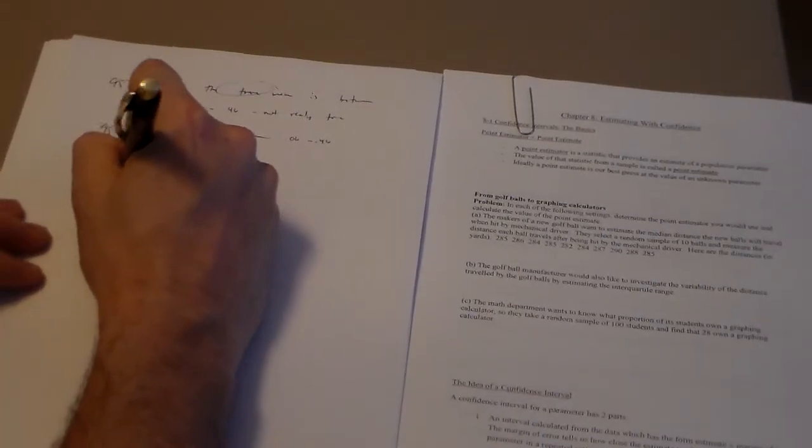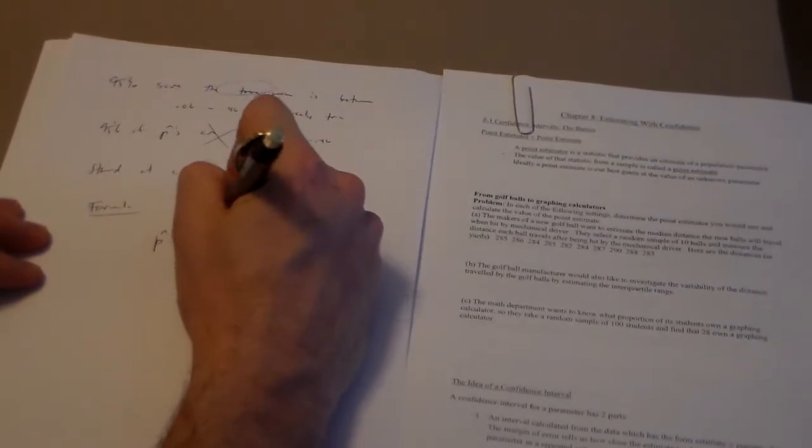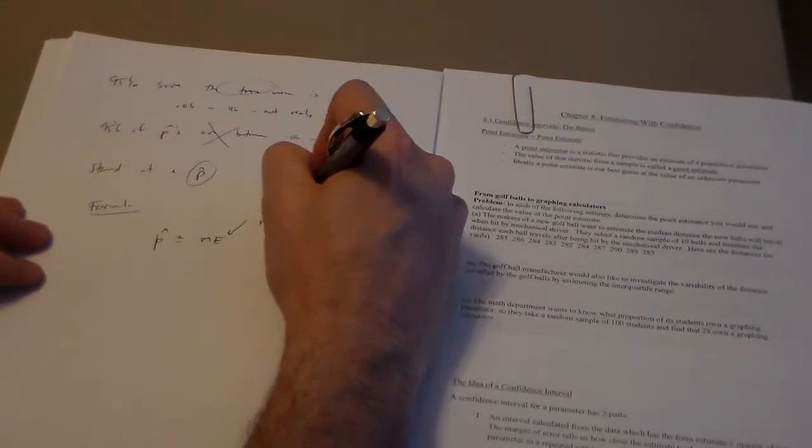Here's your formula. All of that for this formula. P hat plus or minus ME. ME stands for margin of error.